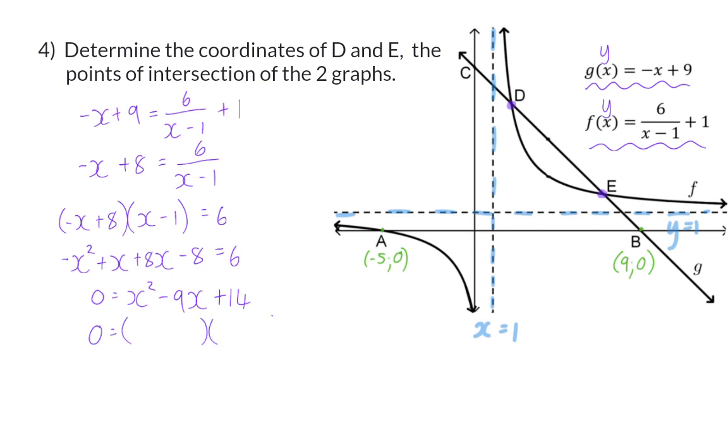Now we have a trinomial that can be factorized to give us x is equal to 2 or x is equal to 7.